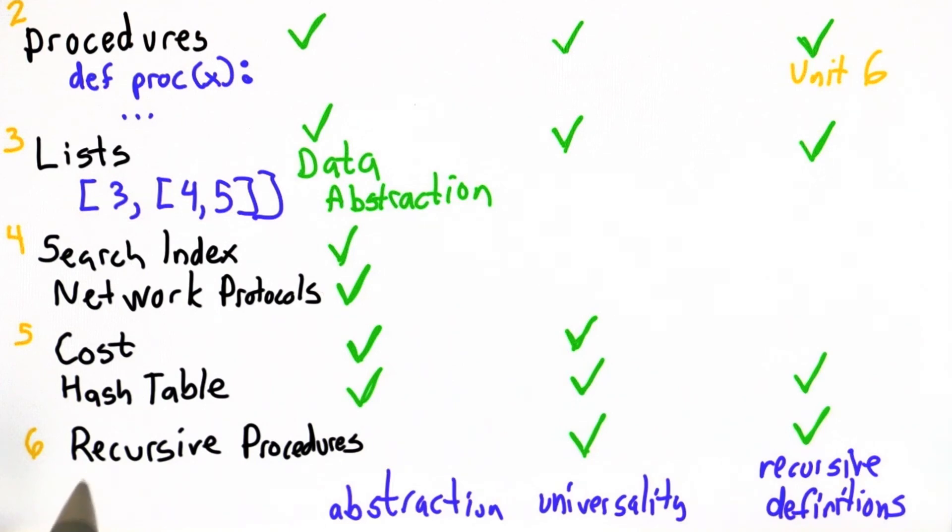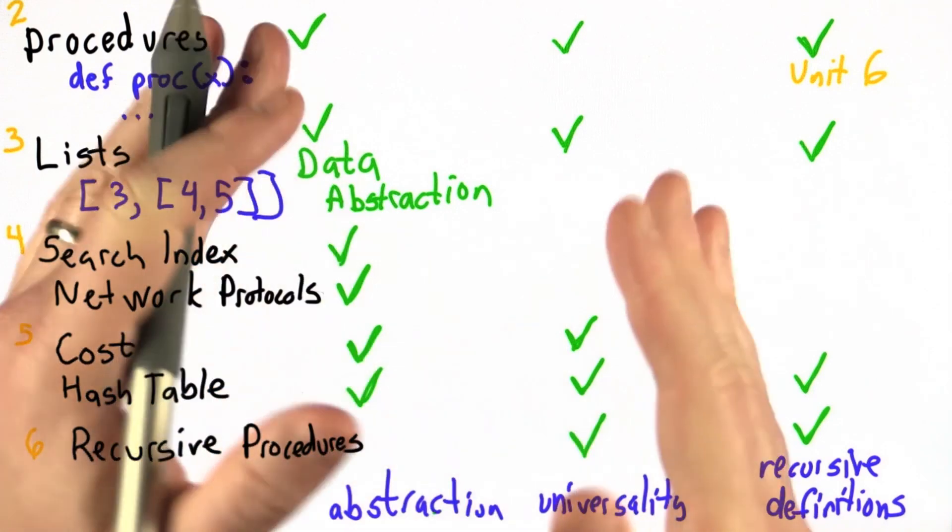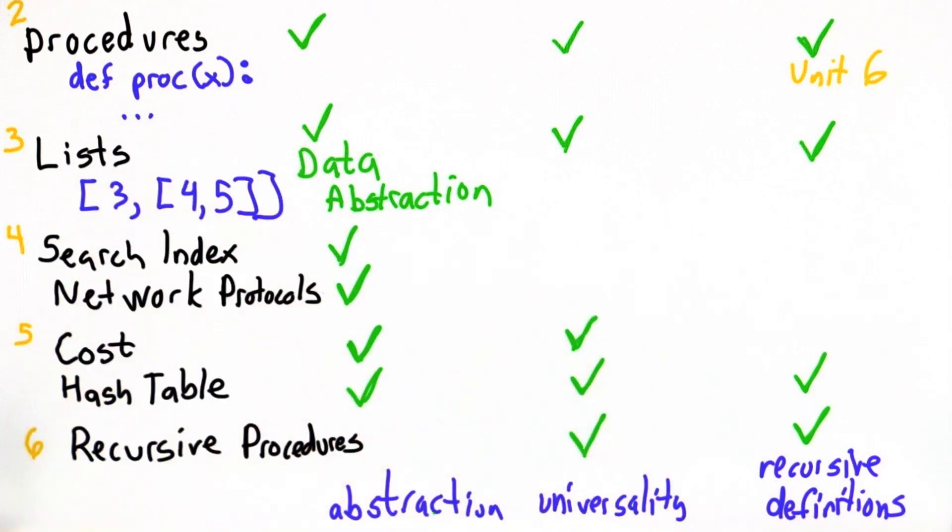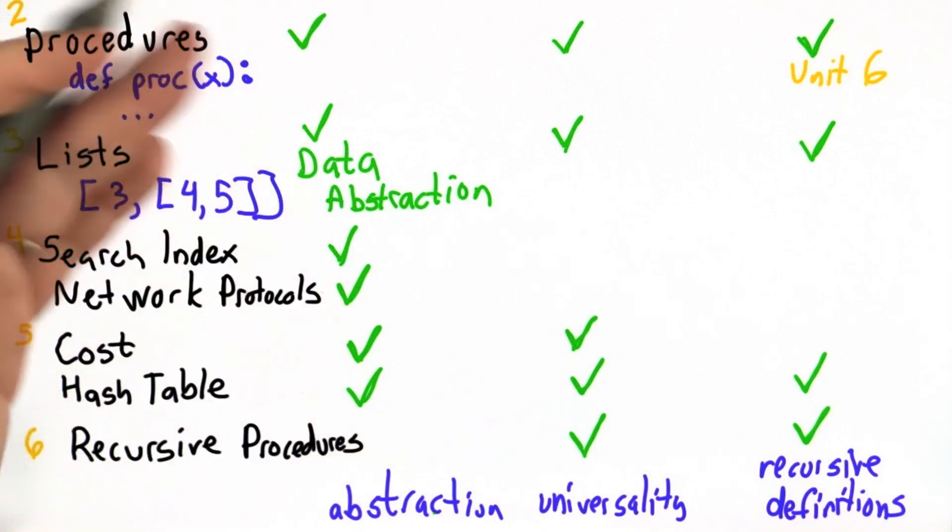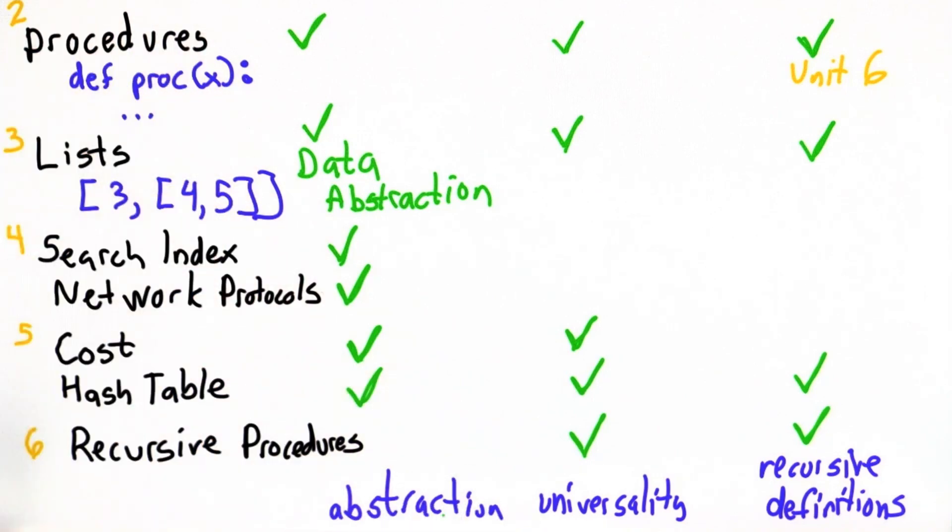And we saw that any program that we could write as a recursive procedure, we could also write as a while loop. So if you've followed everything that we've done in this class, you've really learned an amazing amount. And as you learn more and more about computing, you'll see these three themes of abstraction, universality, and recursive definitions all over the place. But you've already seen them many, many times just in the units of this course.